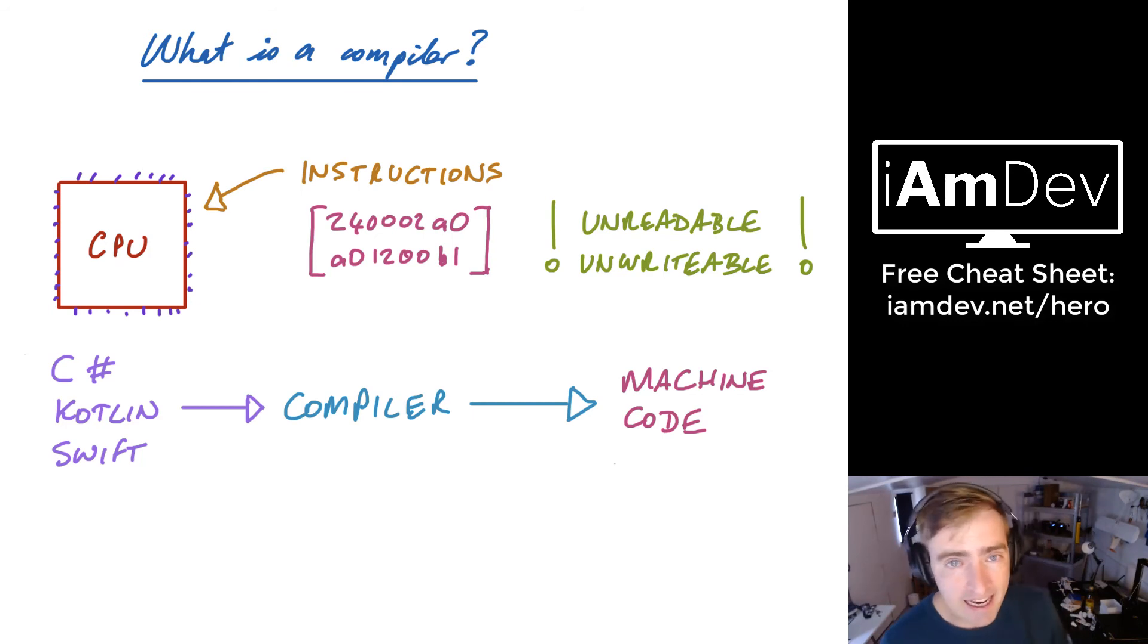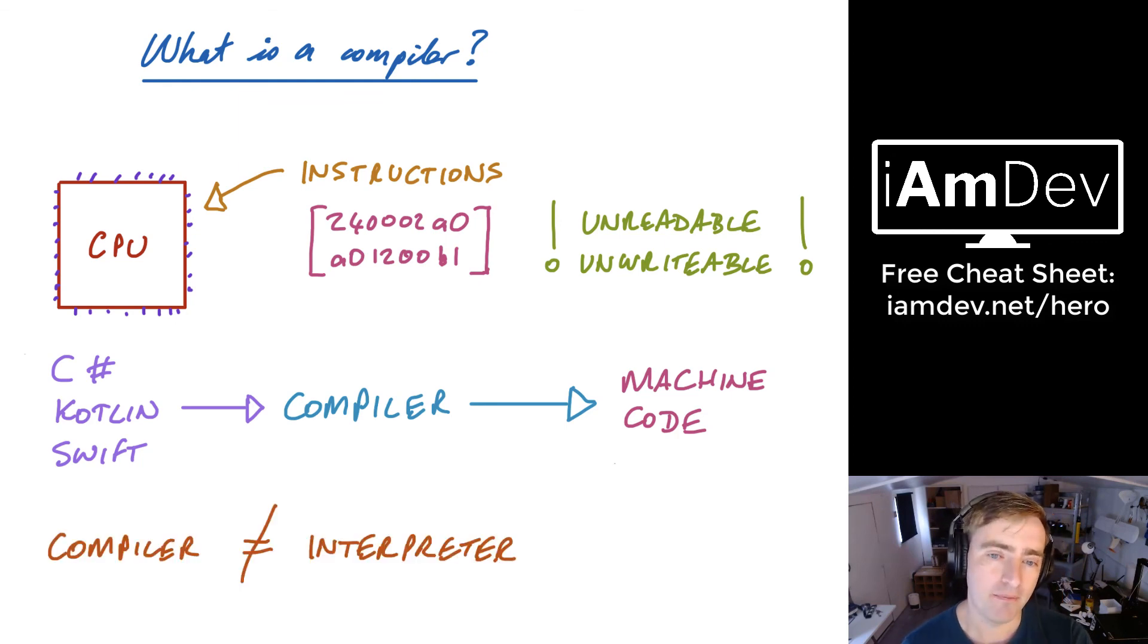Now, if you are in an interview and they ask you this question, do you know what the death nail is? The sound of your approaching doom is when you say a compiler is an interpreter for our programming language to give us machine code. You are totally off the mark there, because an interpreter is something different to a compiler.